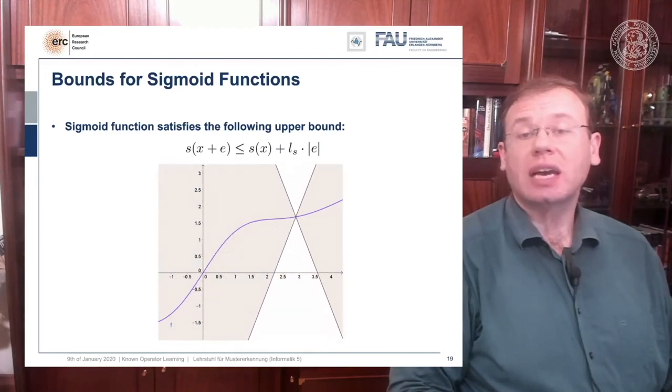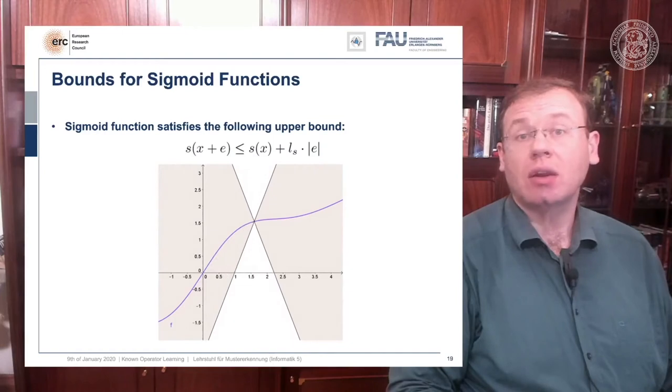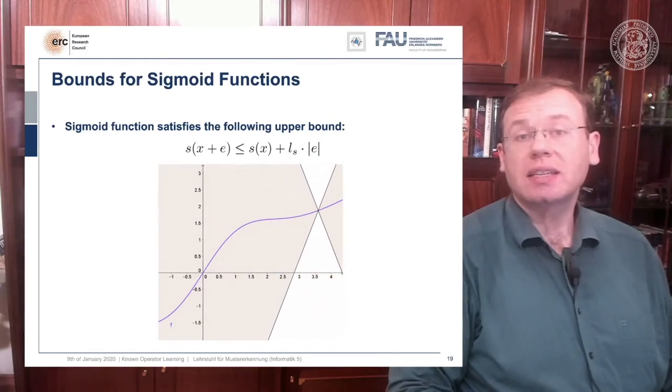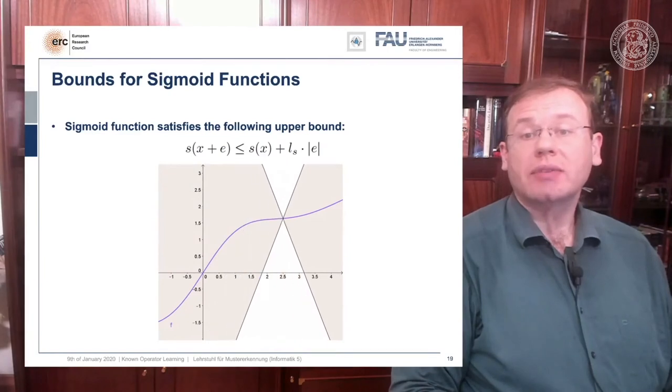So we essentially have the two white cones that always will be above or below the function. Obviously we can also construct a lower bound using the Lipschitz property. Well now what can we do with this?